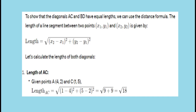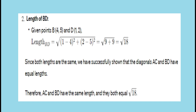Solution 3: Show that the diagonals have equal lengths. To find the lengths of AC and BD, we use the distance formula. The length of a line segment between two points (x1, y1) and (x2, y2) is given by the distance formula. Length of AC = √((1−4)² + (5−2)²) = √((−3)² + 3²) = √(9+9) = √18. Length of BD = √((2−5)² + (1−4)²) = √((−3)² + 3²) = √(9+9) = √18.